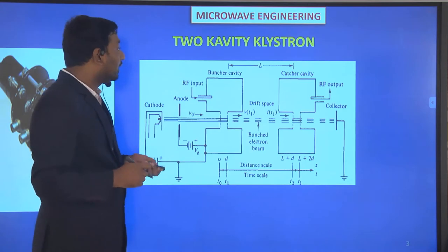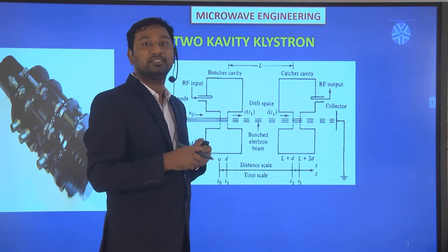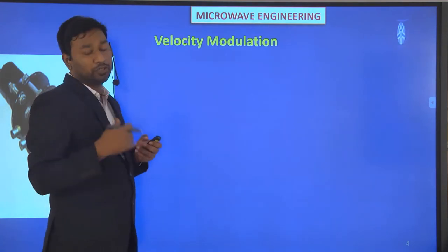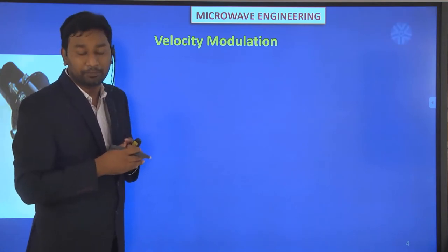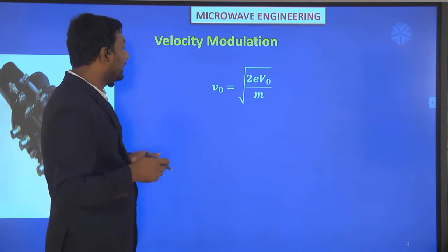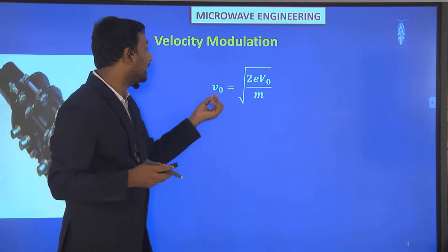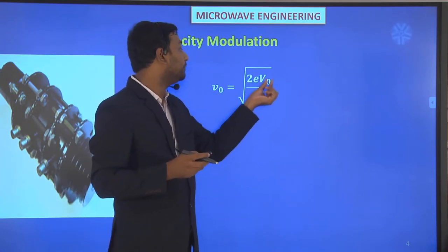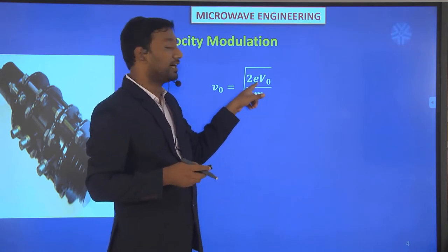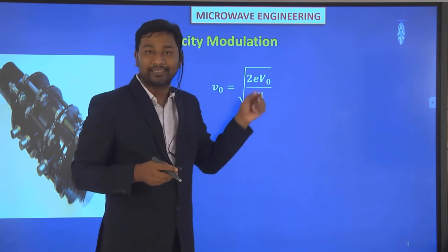Now we will calculate at what distance the bunching process occurs and how it occurs. Before going through the bunching process, which is the effect of velocity modulation discussed in the last lecture, we will first discuss the velocity modulation before going through the buncher cavity.